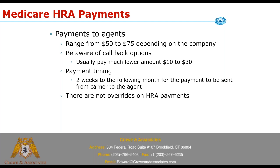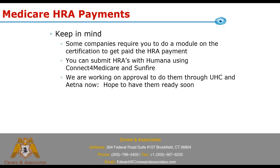For anybody who is part of an agency or owns an agency, there are no overrides on HRA payments. It's not like with the CMS allowable commission where you have a GA, MGA, or SGA override schedule. HRAs don't have overrides on those currently, so it's a payment to the agent only — there is no override for the FMO, NMO, or the agency. Some companies require you to do a module on the certification to get paid on the HRA, so you have to check on that. We have documents for most of the companies detailing the HRA process — if you have to do a separate training module to get paid on HRAs, it lists it there. We can email those out to you.